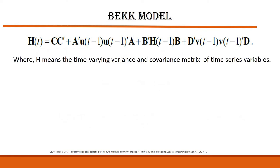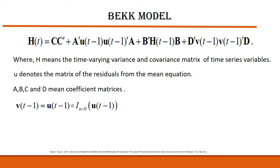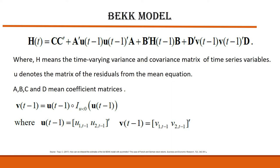In this equation, H is the time-varying variance and covariance matrix of the time series variable. U denotes the matrix of residuals from the mean equation. A, B, C, and D are coefficient matrices. V_{T-1} equals U_{T-1} ∘ I where U < 0, and U_{T-1} = [U_{1,T-1}, U_{2,T-1}]' and V_{T-1} = [V_{1,T-1}, V_{2,T-1}]'. The circle symbol denotes the Hadamard product.